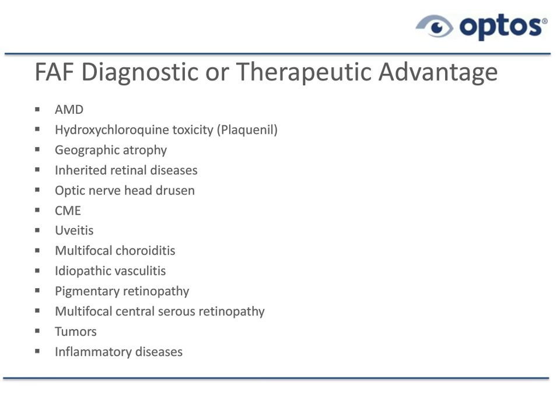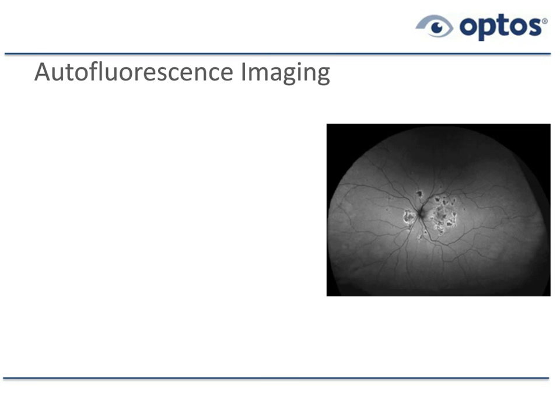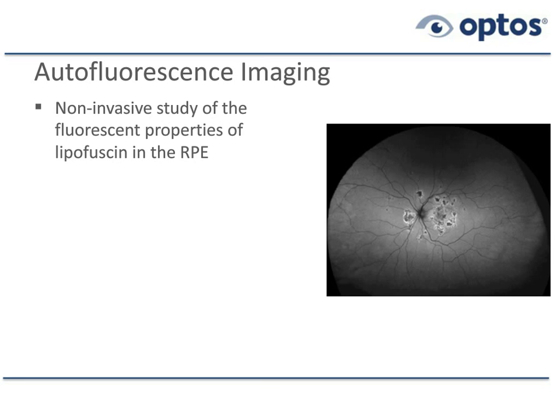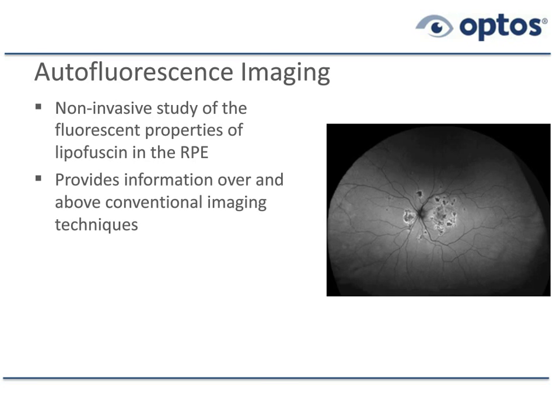AF gives us, on occasion, a therapeutic advantage to make a diagnosis and treat early. Autofluorescence imaging is non-invasive — we're not injecting sodium fluorescein into the antecubital vein; we're just taking pictures. The autofluorescent property of the retinal pigment epithelium allows us to assess the integrity of the RPE. Since the RPE is so intertwined with the photoreceptors, when there's an RPE problem, there will be a photoreceptor problem as well.